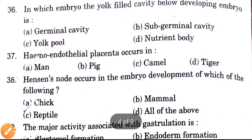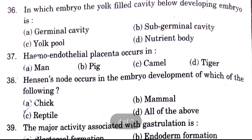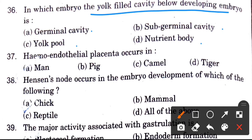In which embryo is the yolk-filled cavity below the developing embryo? Options are germinal cavity, sub-germinal cavity, yolk pool, and nutrient body. The answer is sub-germinal cavity.